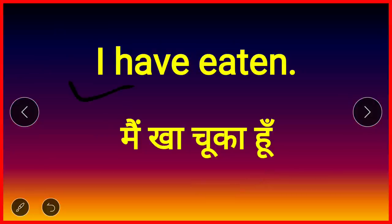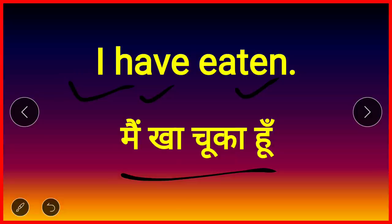Present perfect tense example: 'I have eaten' — main kha chuka hoon, or mainne kha liya hai. Notice here the verb is in its third form (past participle) — eat, ate, eaten. So 'I have eaten' — main kha chuka hoon / mainne kha liya hai.